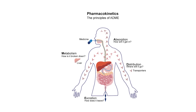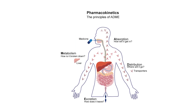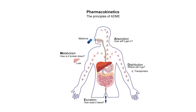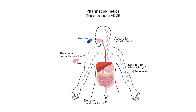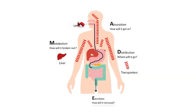Pharmacokinetics refers to the study of how drugs move through the body over time. It is a branch of pharmacology that focuses on the processes that define the drug's journey from administration to its elimination. These processes can be categorized into four main stages, often abbreviated as ADME.